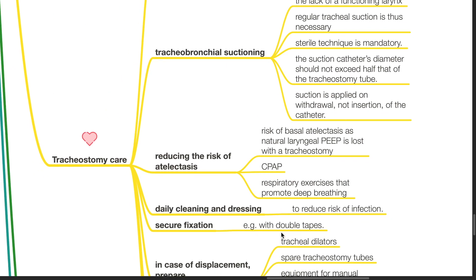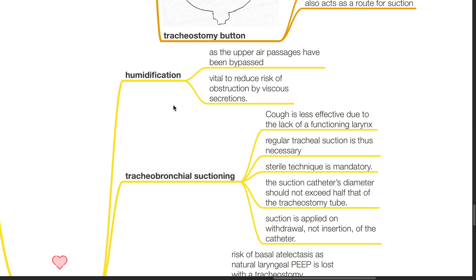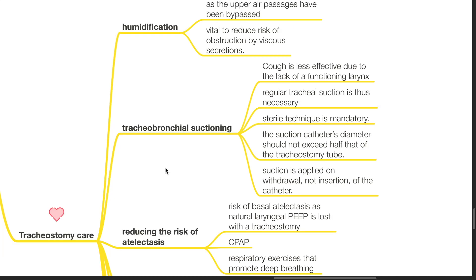Tracheostomy care: humidification of inspired gases should be provided as the upper air passages have been bypassed — vital to reduce risk of obstruction by viscous secretions. Regarding tracheobronchial suctioning: cough is less effective due to the lack of a functioning larynx, so regular tracheal suction is necessary. Sterile technique is mandatory. The suction catheter's diameter should not exceed half that of the tracheostomy tube, and suction is applied on withdrawal, not insertion of the catheter.